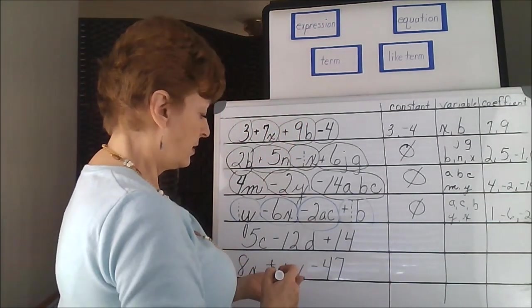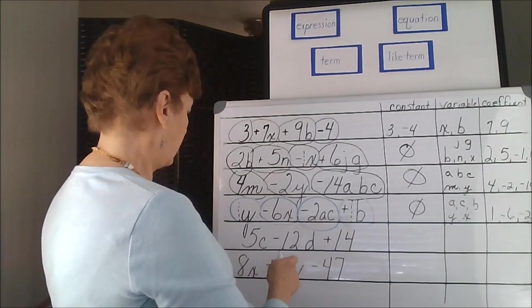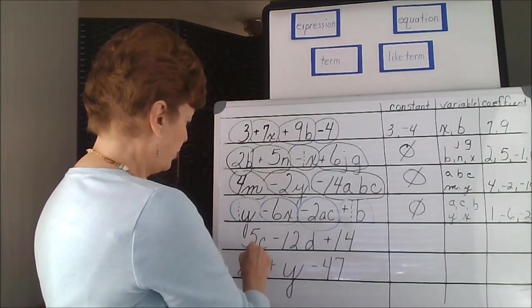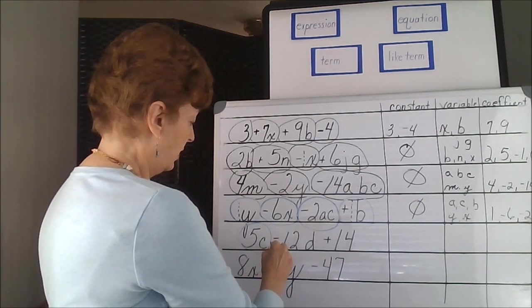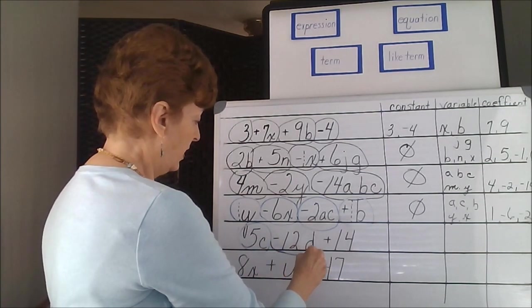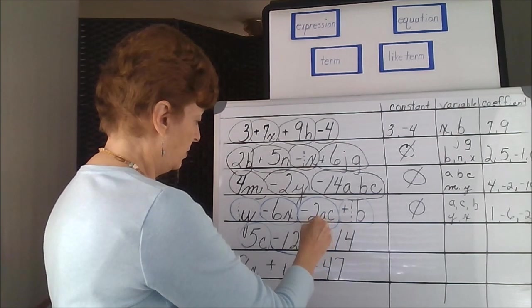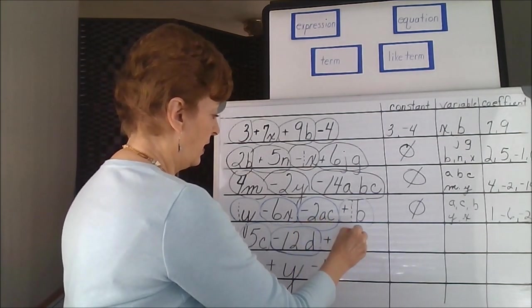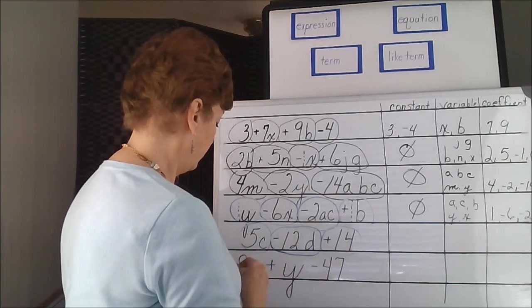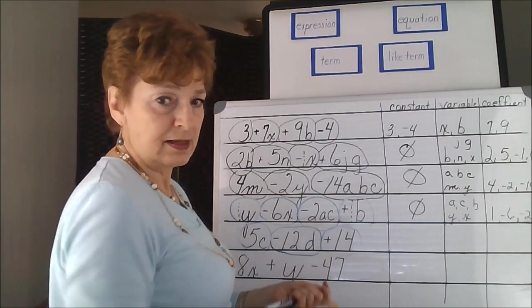Our next expression, finding our terms. It starts with this negative and goes over to the end of this before we have a positive sign, and that's the beginning of the third term. Three separate pieces in this.